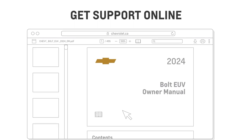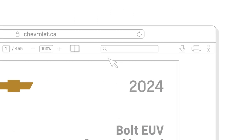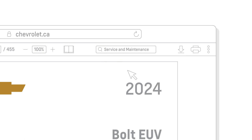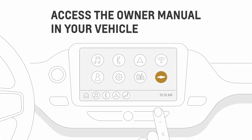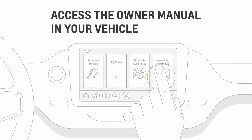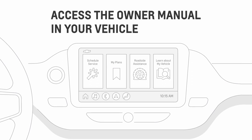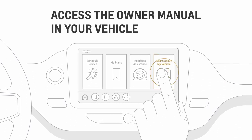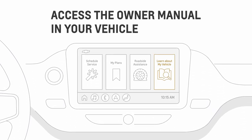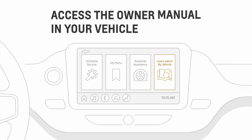Once you have the PDF manual, you can also search for Service and Maintenance or Maintenance Schedule using the Find feature. To access the Owner Manual in your vehicle, tap the MyChevrolet app on your infotainment screen, then tap Learn About My Vehicle, and you can start searching by keyword.